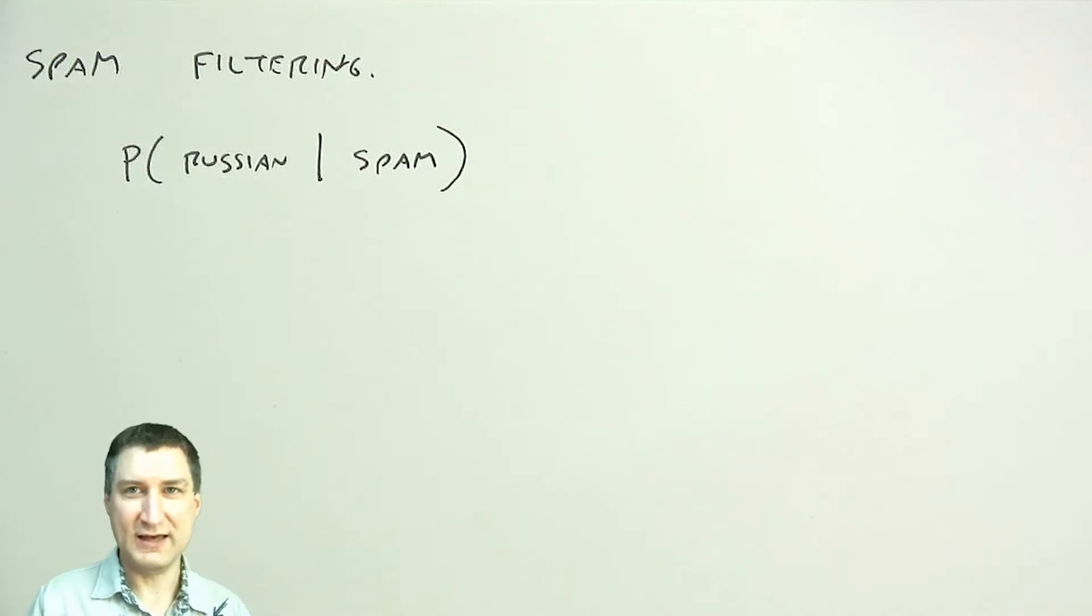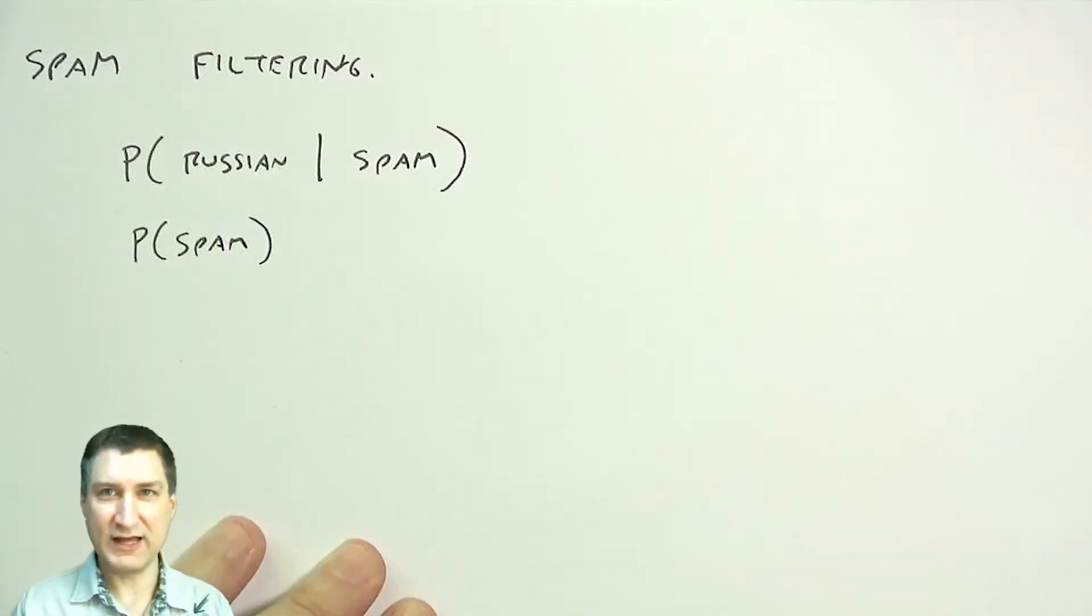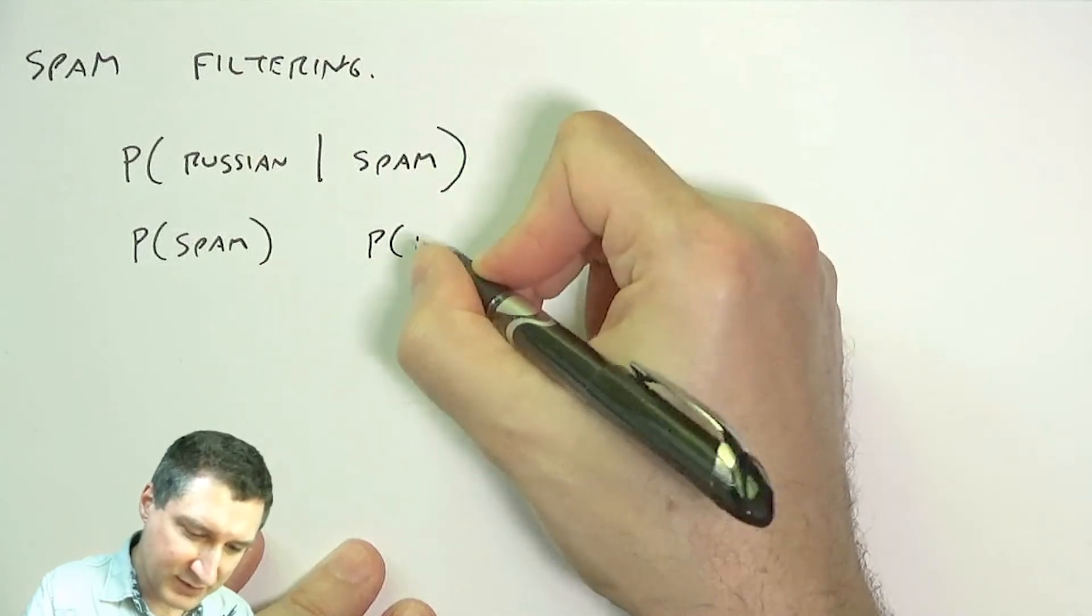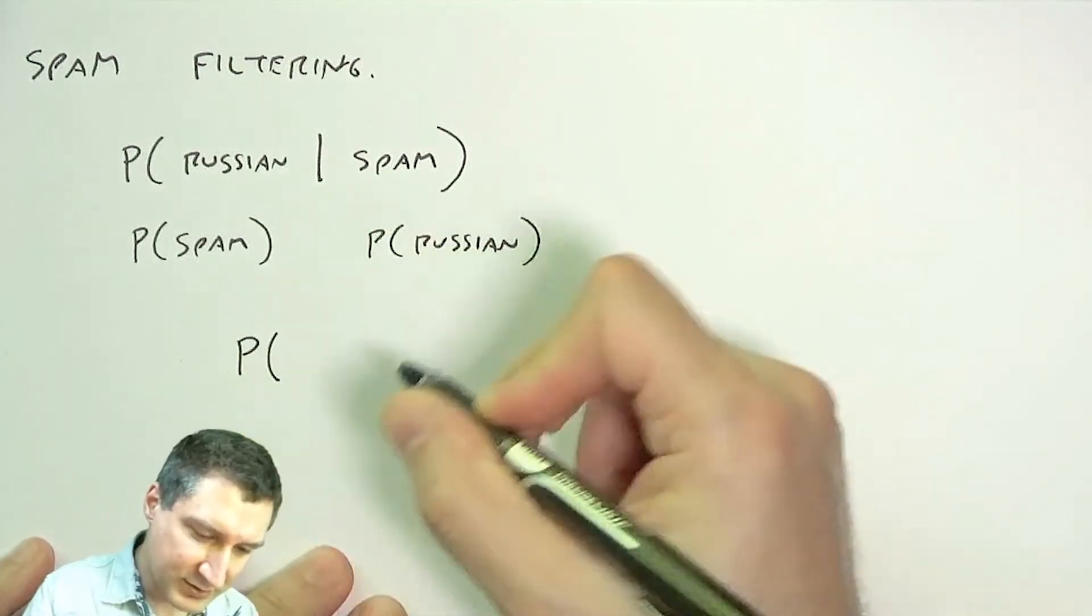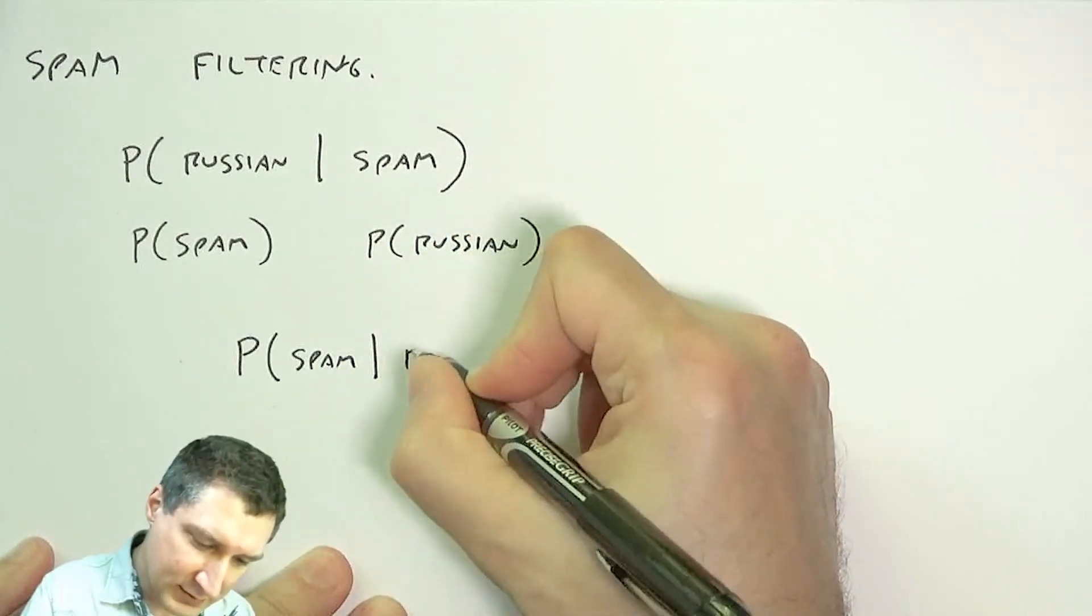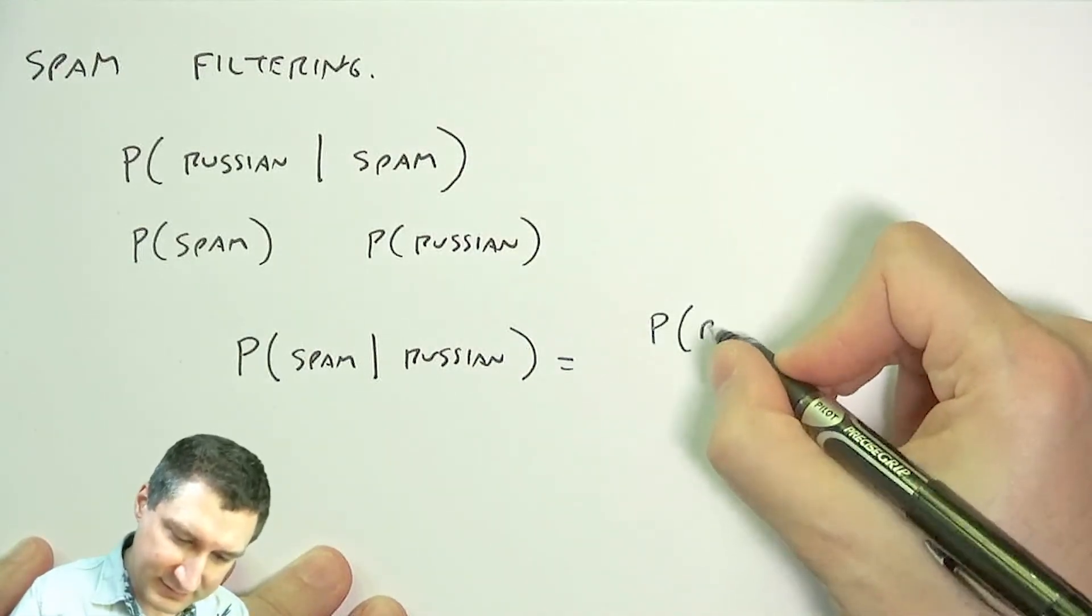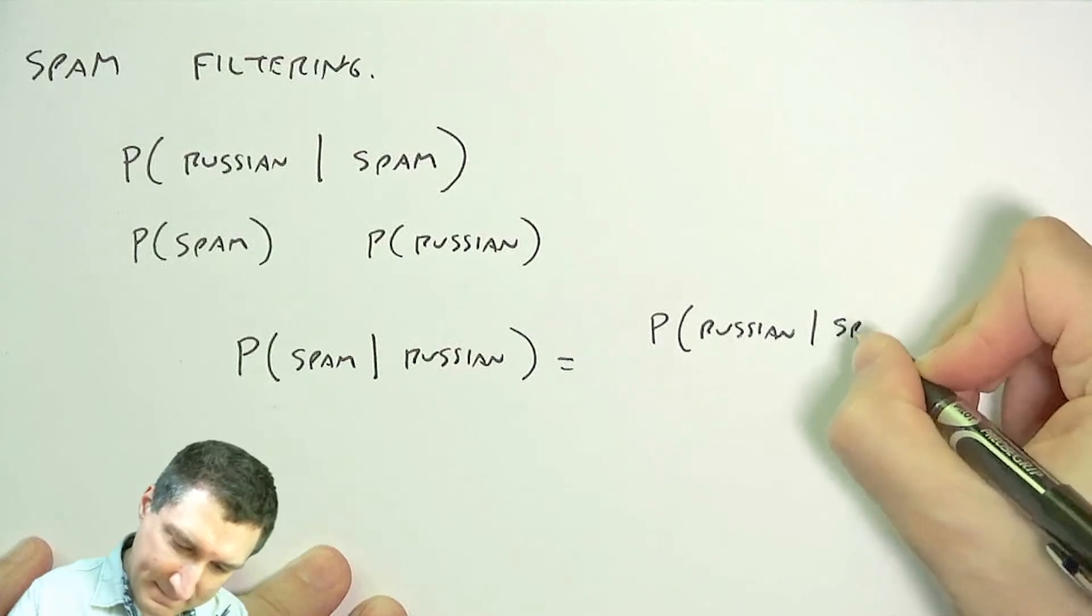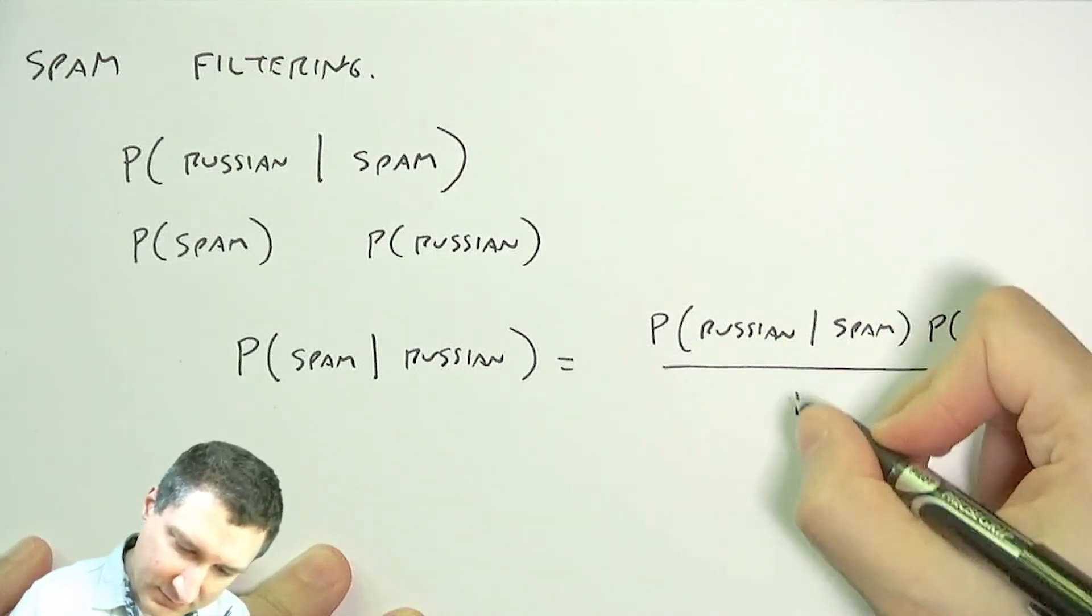So I've given it that conditional by training it. It also knows the probability of spam given the overall volume of mail that I get. And it also knows the probability of Russian given all the mails that I get. So my mailbox knows this stuff just by monitoring things. And once it has good estimates of all this stuff, it can estimate the probability of spam given Russian as the probability of Russian given spam times the probability of spam over the probability of Russian.